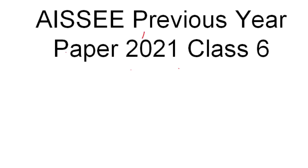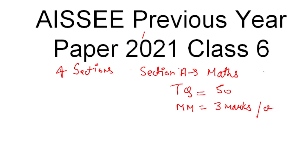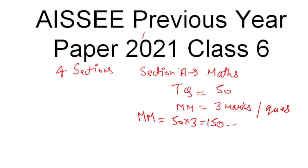Regarding the paper pattern, as you all know there are four sections. Section A will be of Maths. There will be 50 questions, and each question is 3 marks, so total marks of Maths will be 3 into 50, that is 150.